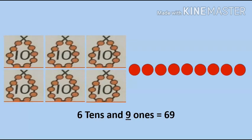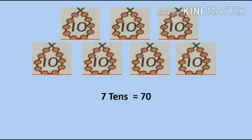Six tens and nine ones is equal to 69. Seven tens is equal to 70.